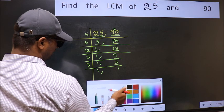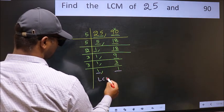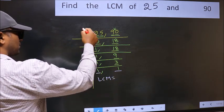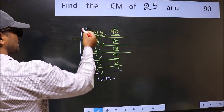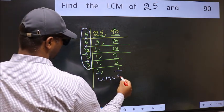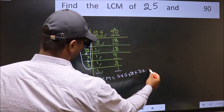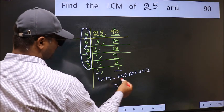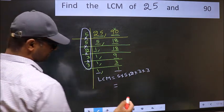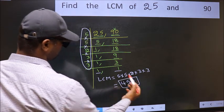So we got 1 in both places. So our LCM is the product of these numbers. That is 5 times 5 times 2 times 3 times 3. When we multiply these numbers, we get 450 as our LCM.